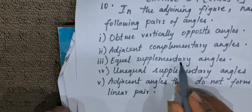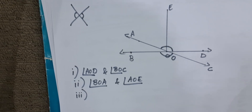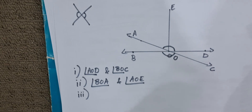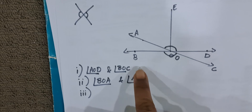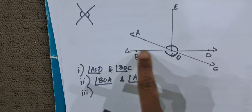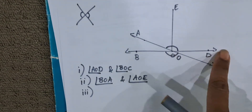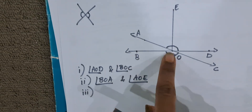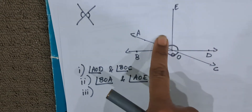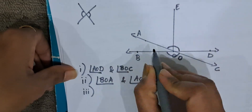The third part asks for equal supplementary angles. Supplementary angles means the sum of two angles is 180 degrees. BOE and EOD together form supplementary angles because BOD is a straight line of 180 degrees. Looking at the figure, BOE is 90 degrees and EOD is 90 degrees — both are equal. So they satisfy both conditions: they are supplementary and equal.